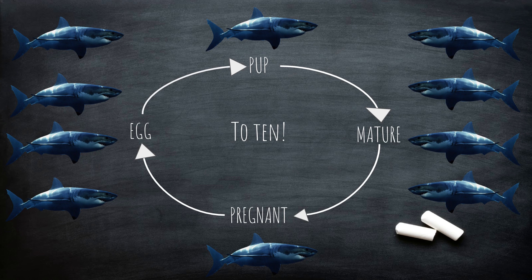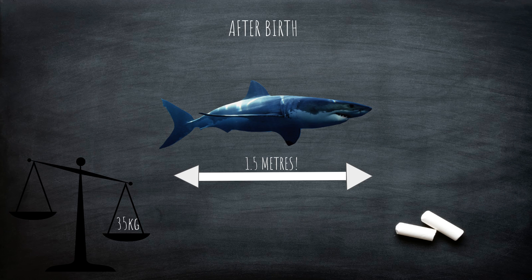Female great white sharks will usually give birth every other year, meaning they have no rest in between gestation. When the pups are born, they will measure up to 1.5 meters and weigh up to 35 kilograms. In order to fertilize, the male great white shark must bite down on the female's dorsal fin for insemination to be successful. This is common across most sharks and is documented by the observation of bite marks on female shark fins.